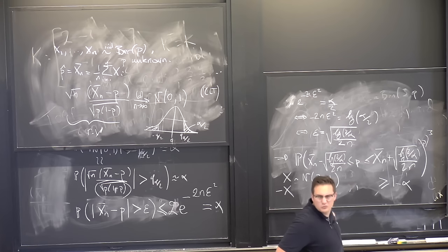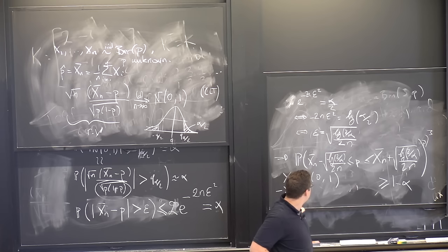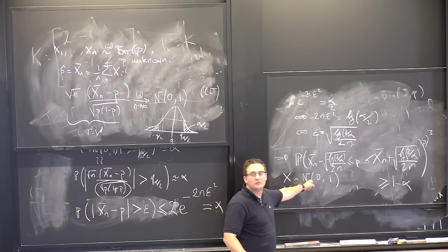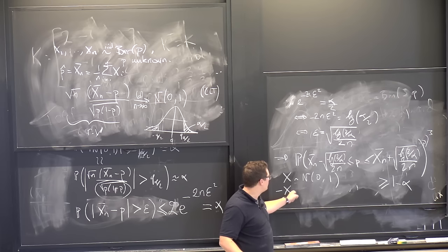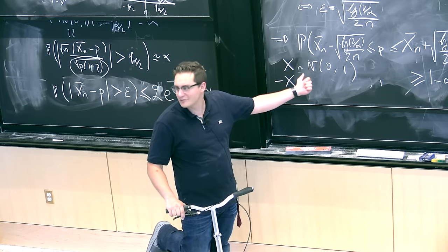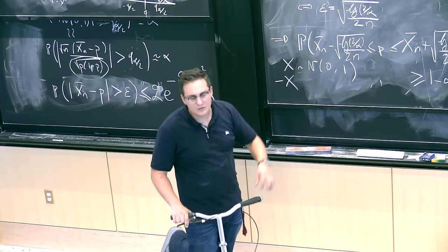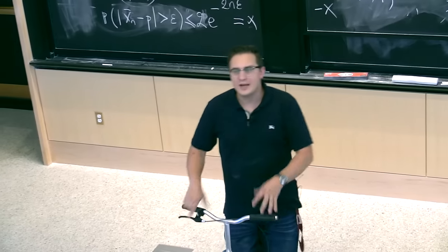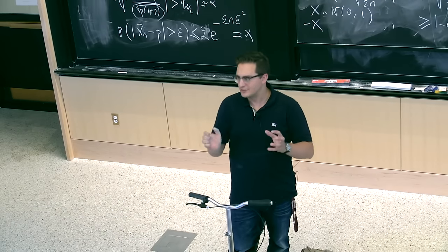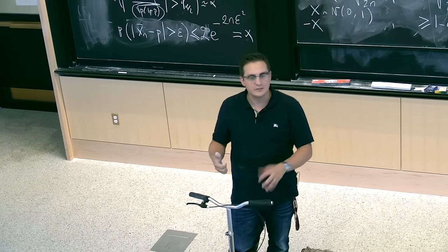For example, x converges in distribution to N(0,1) and -x also converges in distribution to N(0,1), but their sum is 0, which certainly doesn't look like the sum of two independent Gaussians. So we need stronger conditions to combine things together. In particular, if I replace p by p-hat in the denominator, I need p-hat to go to p in a stronger sense than in distribution.